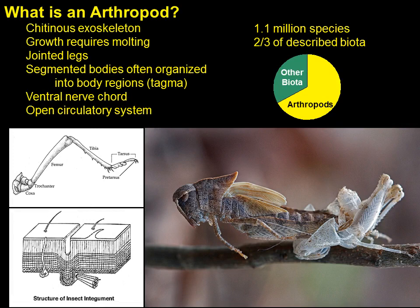Arthropods are characterized by an exoskeleton made up at least in part of chitin. Chitin is hard and provides protection as well as a structure for the attachment of muscles and other structures, but a hard exoskeleton does not permit continuous growth, so arthropods must periodically molt — shed their old exoskeleton for a new, larger one. Arthropods are generally vulnerable during this time and shortly after molting.